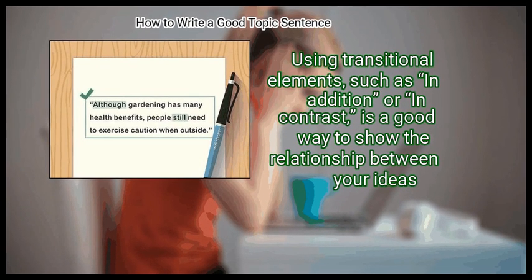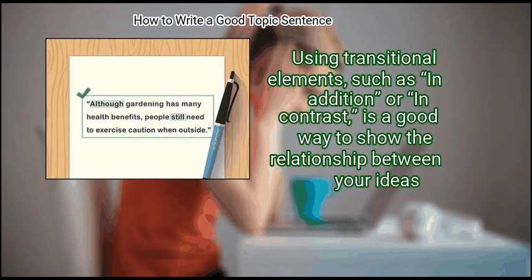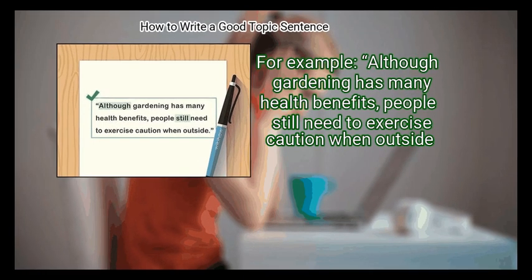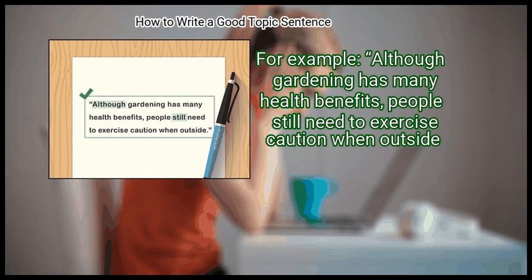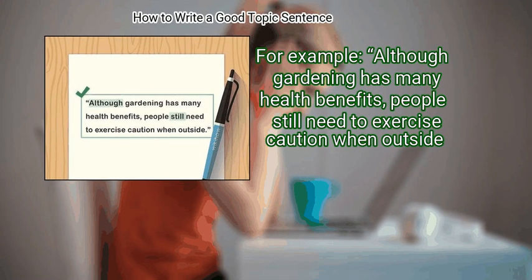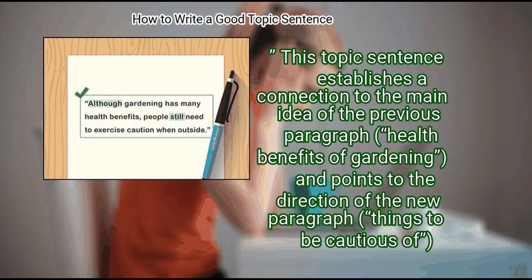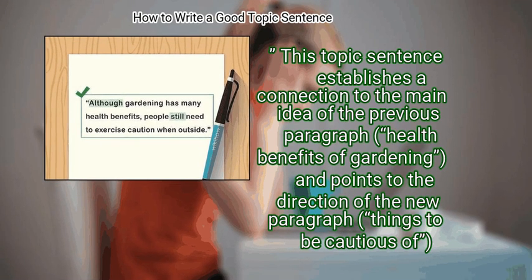Topic sentences that also work as transitions can help guide your readers through your argument. Think of the sentence as a bridge between the main idea of the previous paragraph and the main idea of the next paragraph. Using transitional elements such as 'in addition' or 'in contrast' shows the relationship between your ideas. For example, 'although gardening has many health benefits, people still need to exercise caution when outside' connects to the previous paragraph's idea and points toward the new one.